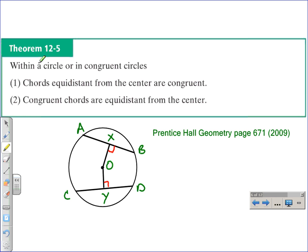Part 1 states: Chords equidistant from the center are congruent. And part 2 reads: Congruent chords are equidistant from the center. They sound pretty much the same because they are. They're converses of each other, really. The first and the second parts are switched.